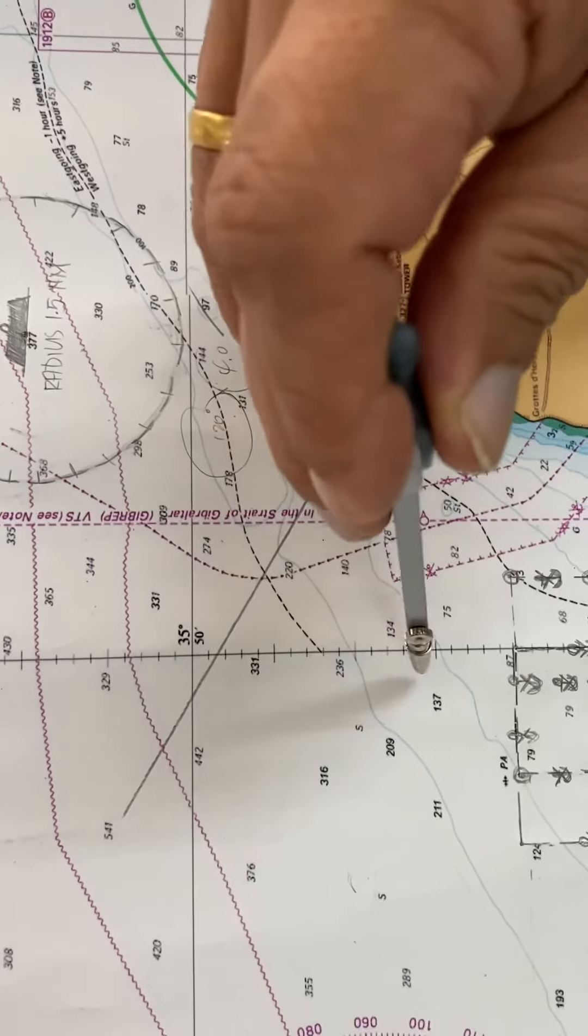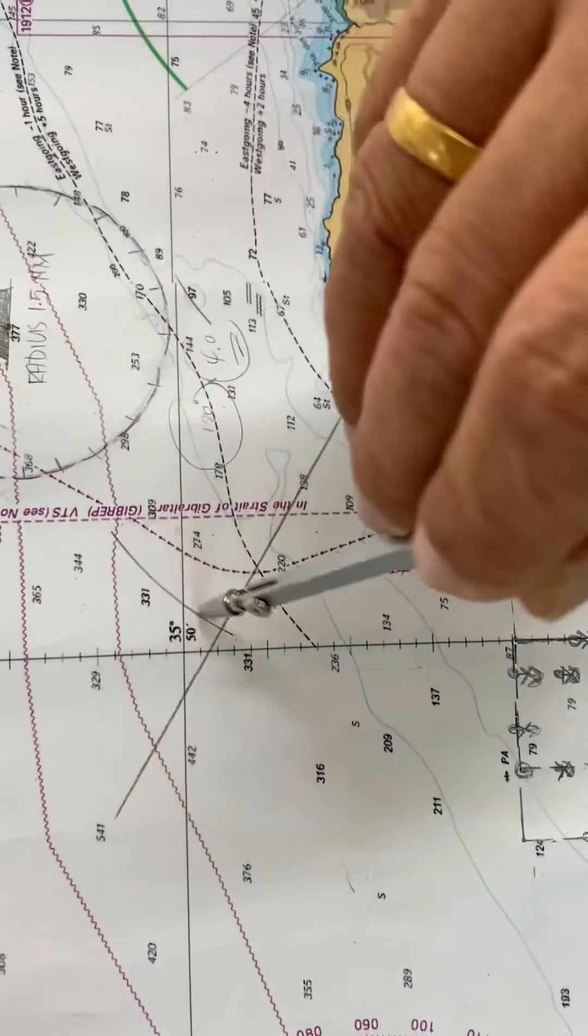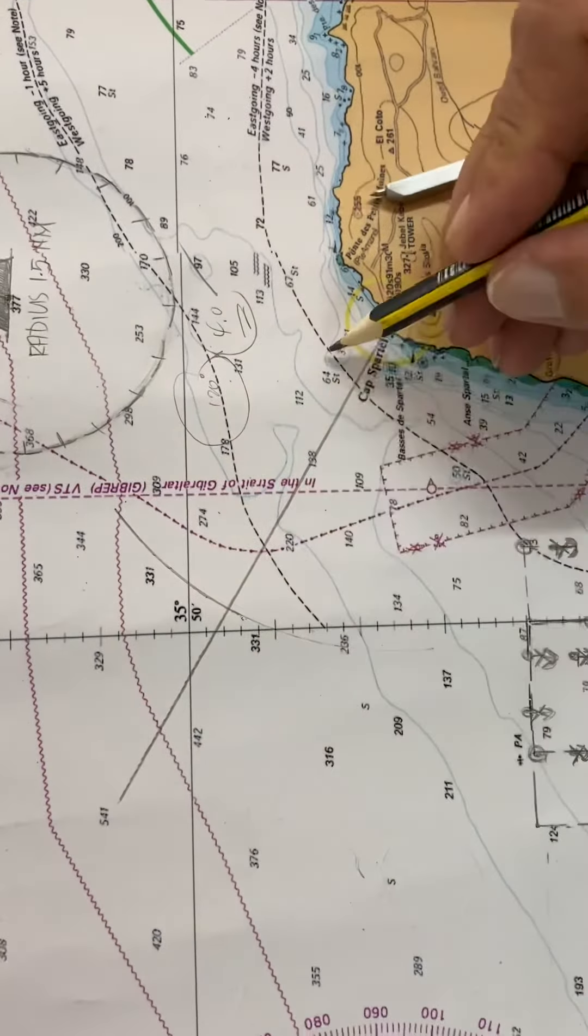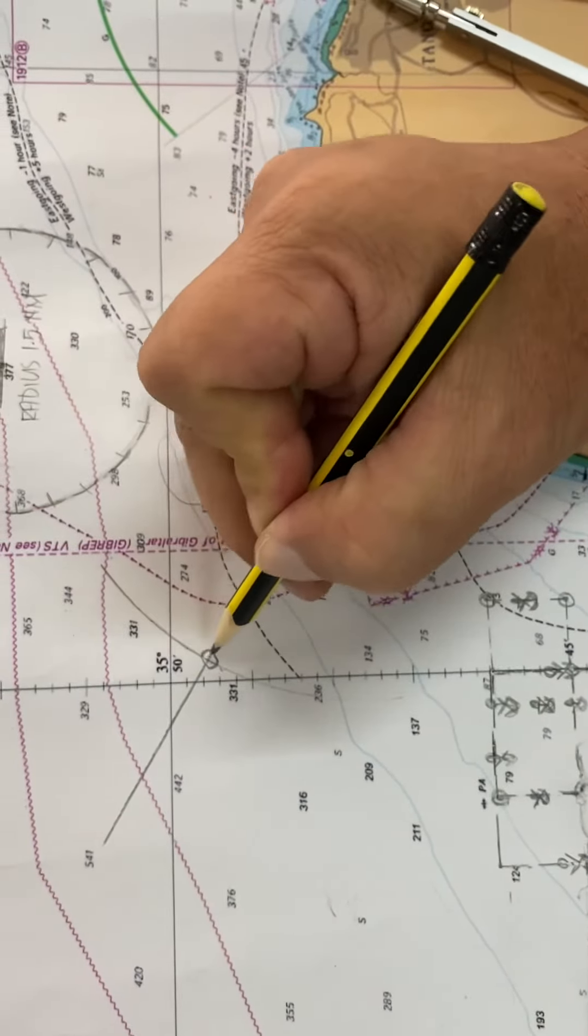The intersection of the bearing line and the range line is your position.